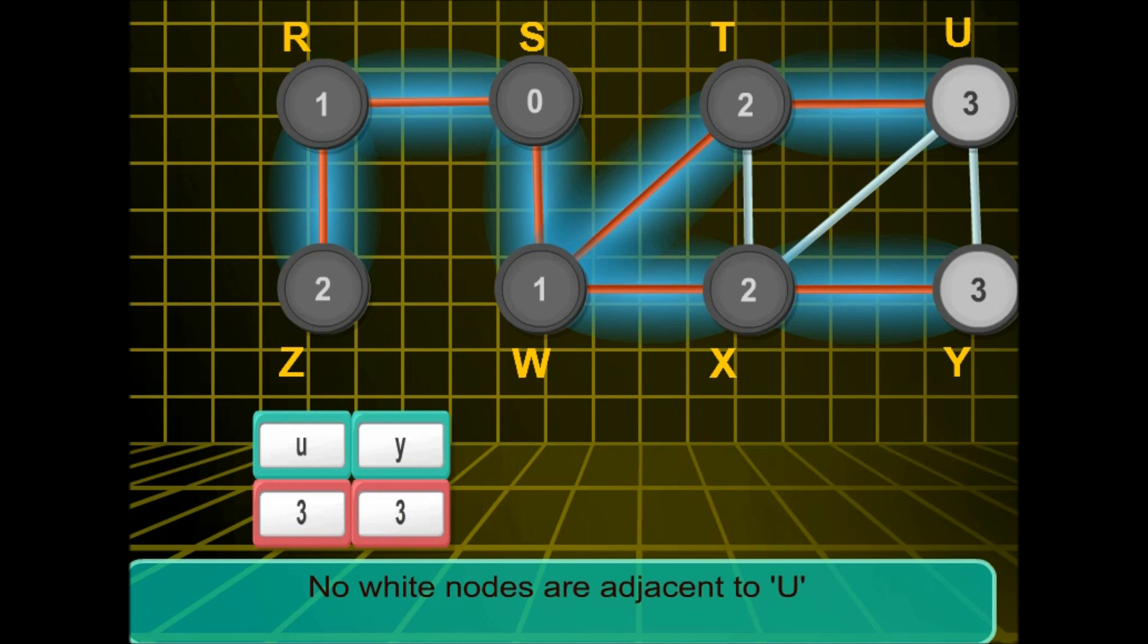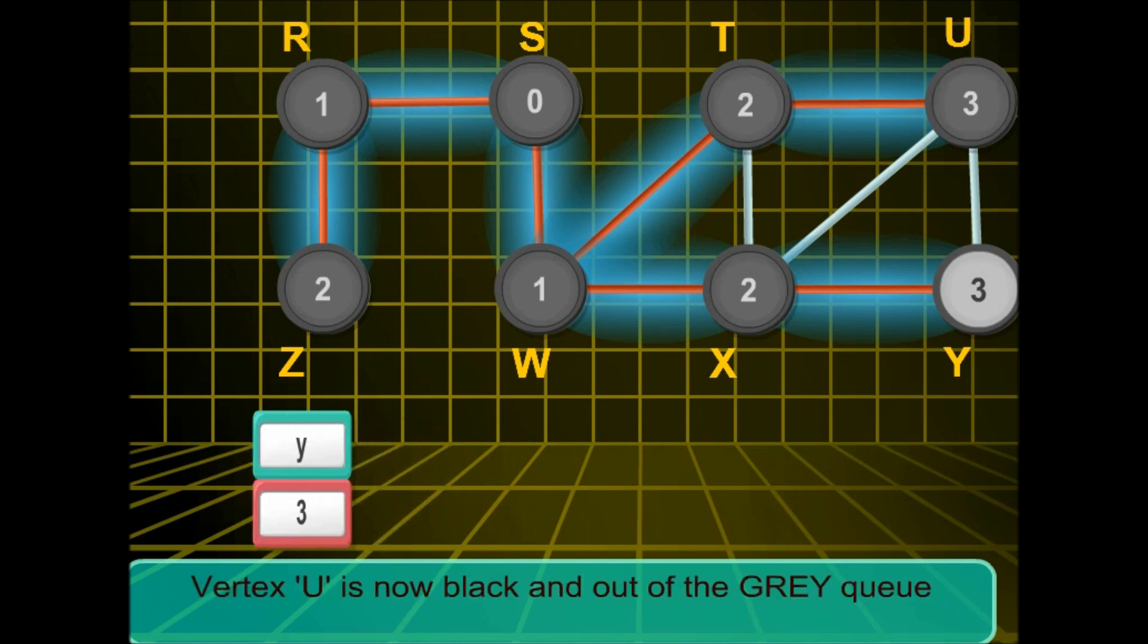Then we'll be looking at y because that will be the only element left in the queue. We find no white element adjacent to y, so it will be simply dequeued. This completes our breadth-first traversal.